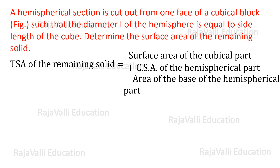The surface area of the cubical part is 6L², since the diameter of the hemispherical part is L, which equals the side of the cube. The curved surface area (CSA) of the hemispherical part is 2πR², and the area of the base of the hemispherical part is πR². So 2πR² minus πR² equals πR², giving us 6L² plus πR².